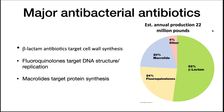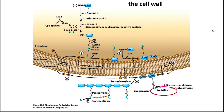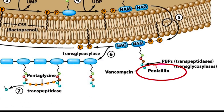We have covered beta-lactam antibiotics in previous lectures. As a reminder, they inhibit the transpeptidation step of cell wall synthesis in bacteria that have peptidoglycan. This weakens the cell walls of susceptible bacteria, eventually causing them to lyse.